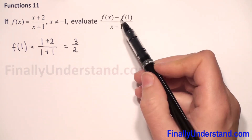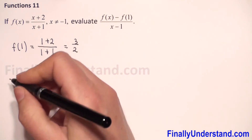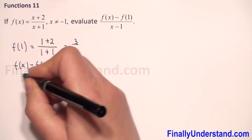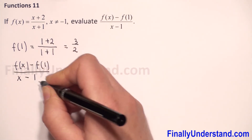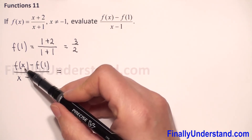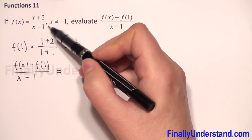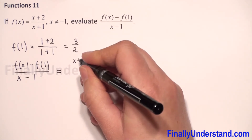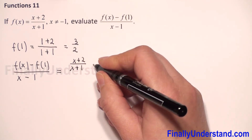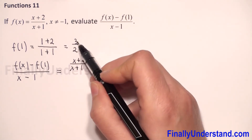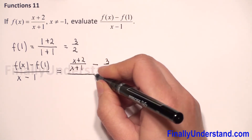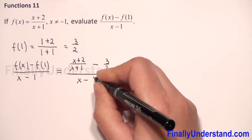So now I can copy our expression. I have f of x minus f of 1, over x minus 1. This is equal: for f of x I have x plus 2 over x plus 1, minus f of 1 which is 3 over 2, and the denominator is x minus 1.